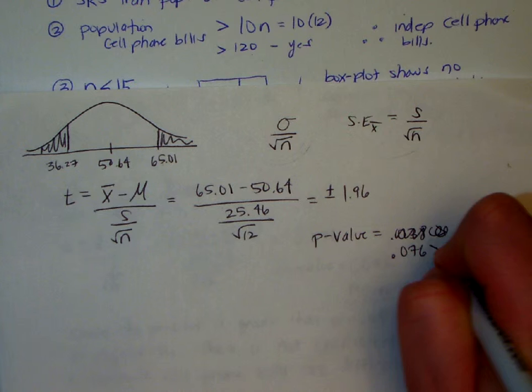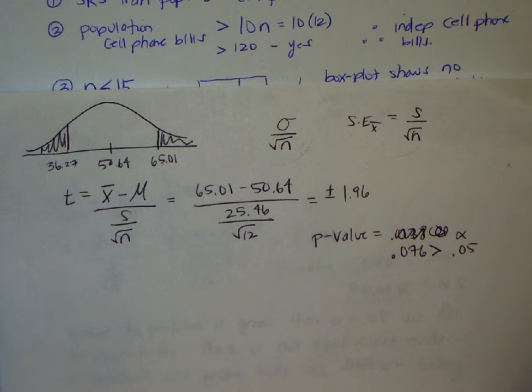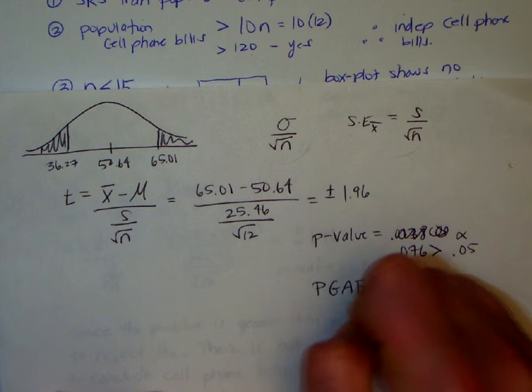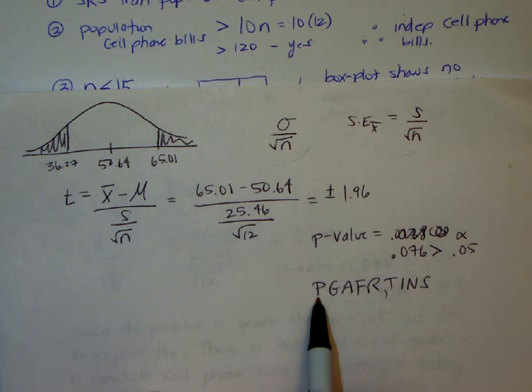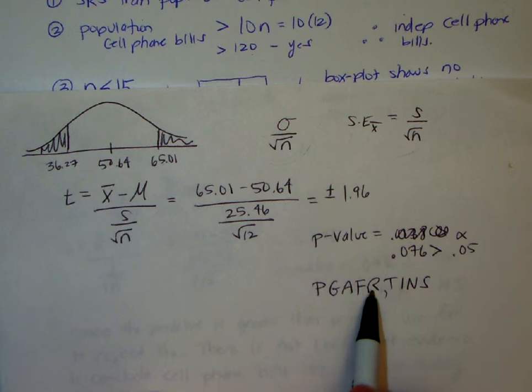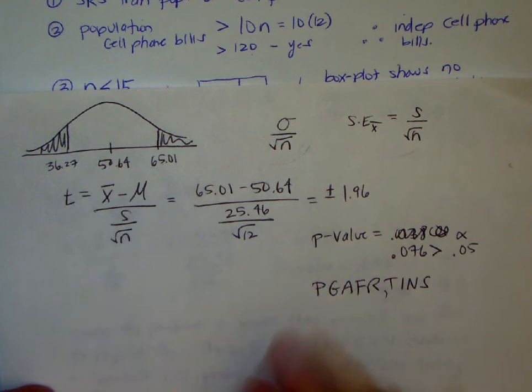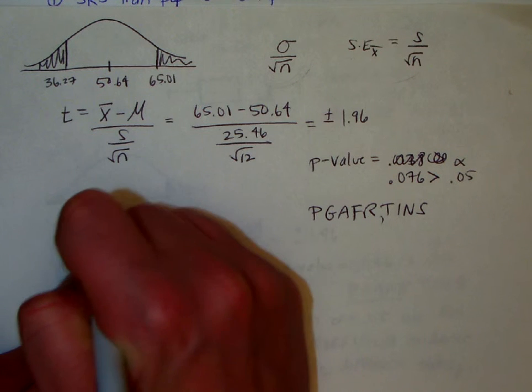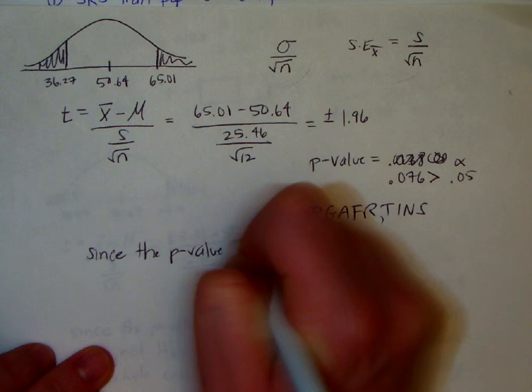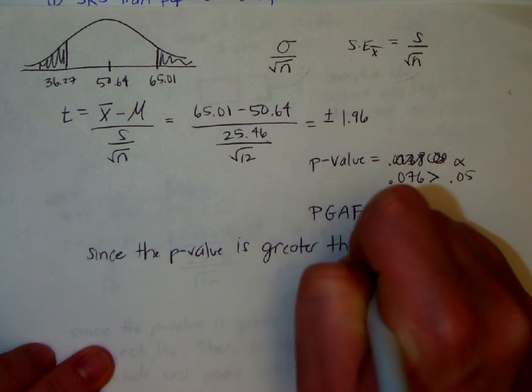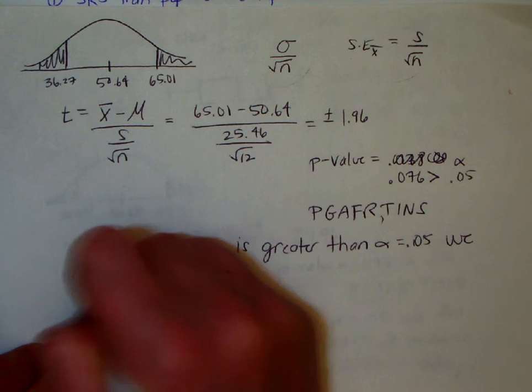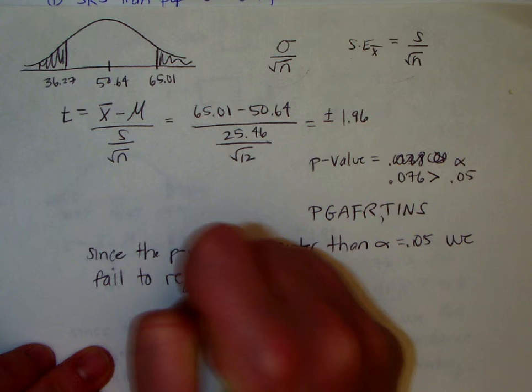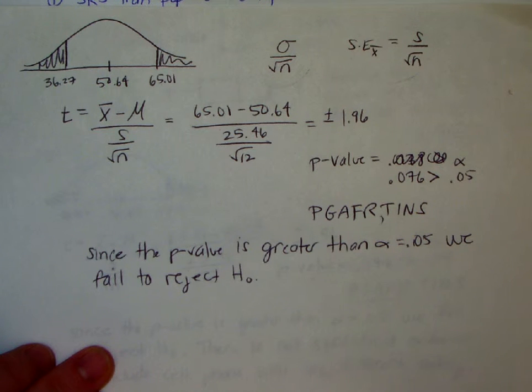which is now greater than our alpha of 0.05. So we are in a pegeffer situation, pegeffer tins. Okay, so the first sentence talks about H0. If P is greater than alpha, we fail to reject H0. You just write that in words. Since the P value is greater than alpha equals 0.05, we fail to reject H0. So, you never talk about HA when you're rejecting or failing to reject. It's always H0.